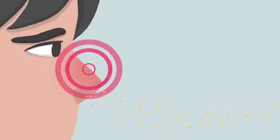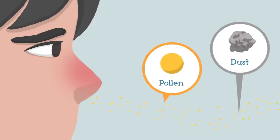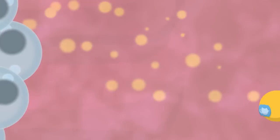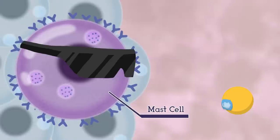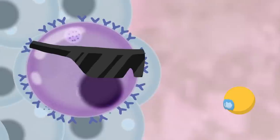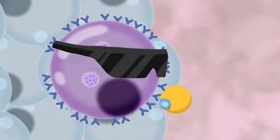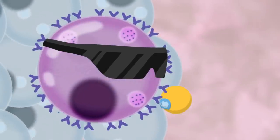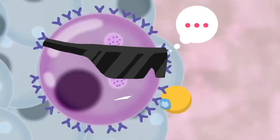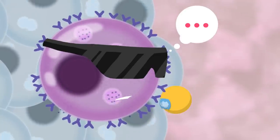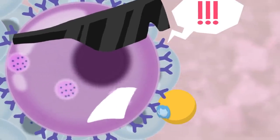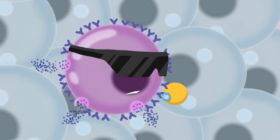Common examples of allergens include pollen and dust. Once inside the nose, they will meet the immune system, particularly mast cells attached to IgE antibodies. The allergen will bind to the IgE antibody, which will then activate and alert the mast cells. In a normal person, the reaction is minimal, but in those suffering from allergic rhinitis, this cell overreacts significantly, signaling to all surrounding cells by releasing histamine.